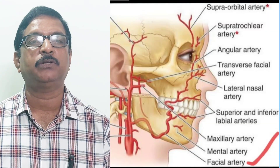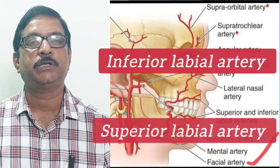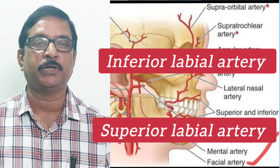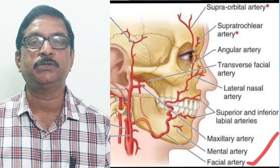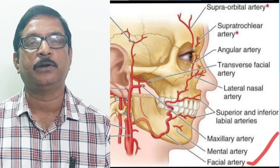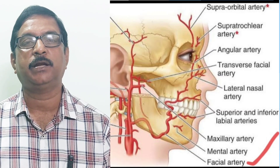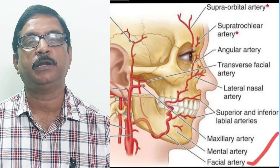Among the many branches of the facial artery, the question is whether any of these branches — either in the neck or in the face — are also tortuous. The answer is that the inferior labial artery and superior labial artery, which are branches of the facial artery in the face, are also tortuous. The tortuosity is more in the superior labial artery than in the inferior labial artery.